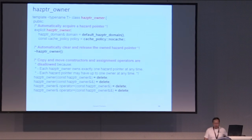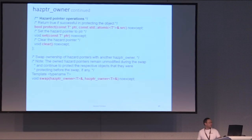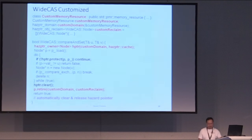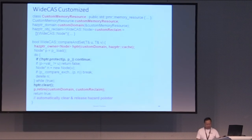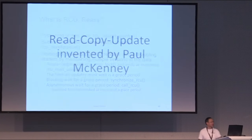The owner template by default uses the default domain and no thread caching. It doesn't copy or move. It guarantees the owner owns a hazard pointer: construction acquires one, destruction releases one. There are functions to protect a reference, set the value, and clear the value, plus a free function to swap owners. The Facebook GitHub project called Folly has all kinds of things for customization. This example shows how to customize it for wide compare-and-swap, and there's a final example showing hand-over-hand traversal.